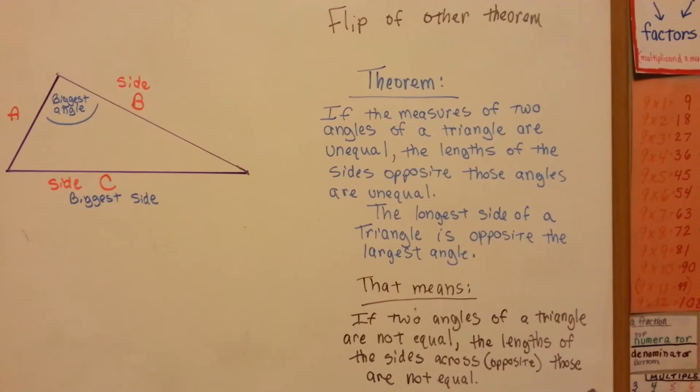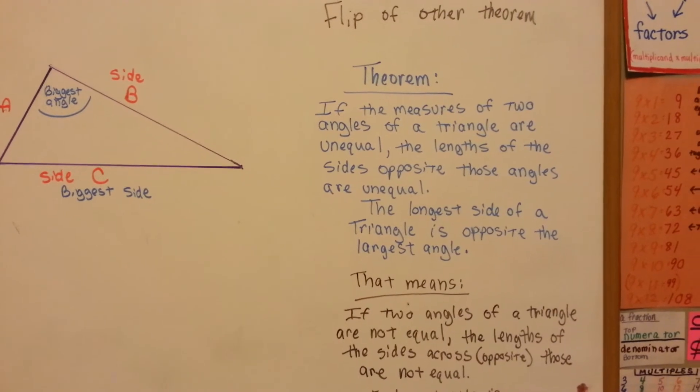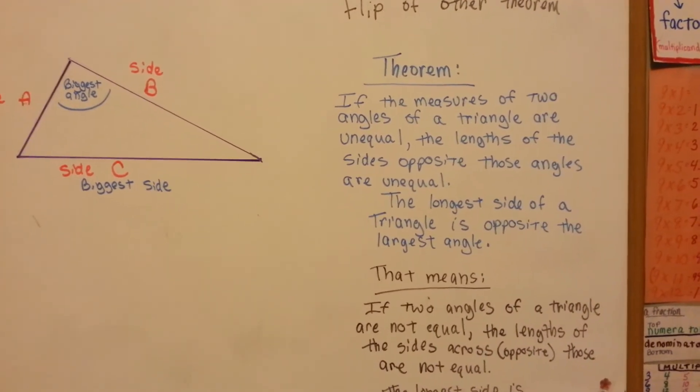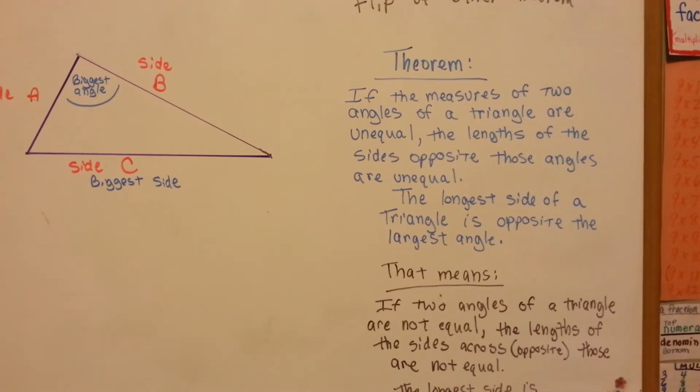If the measures of two angles of a triangle are unequal, the lengths of the sides opposite those angles are unequal. The longest side of a triangle is opposite the largest angle.